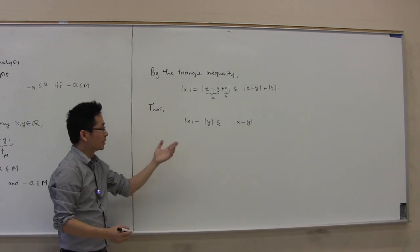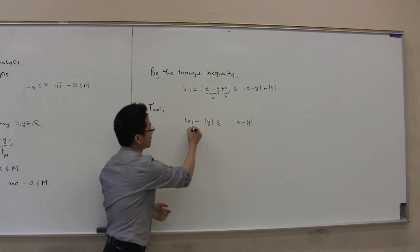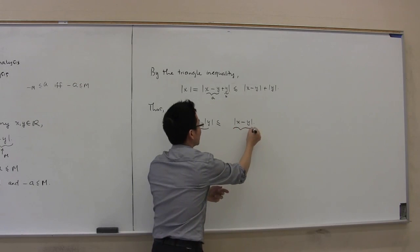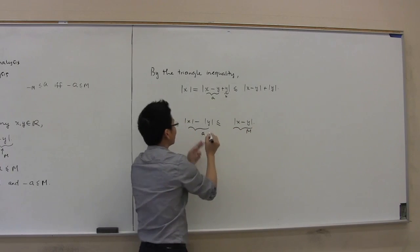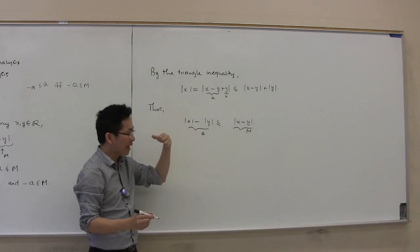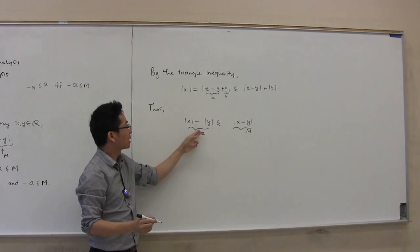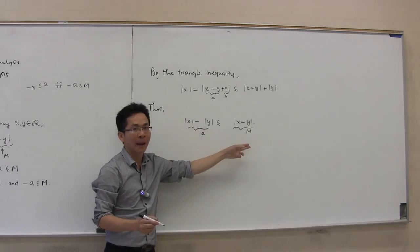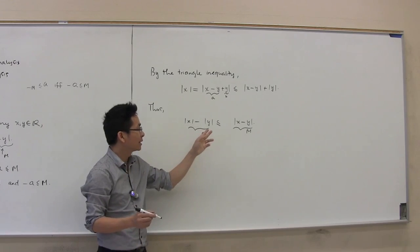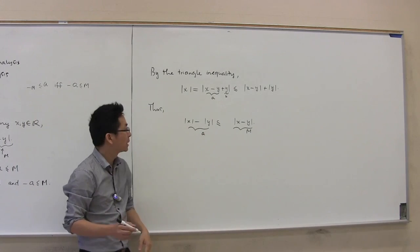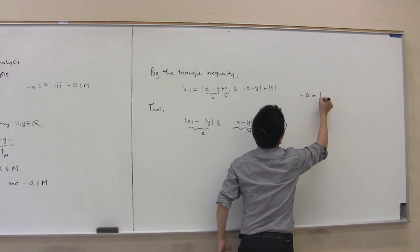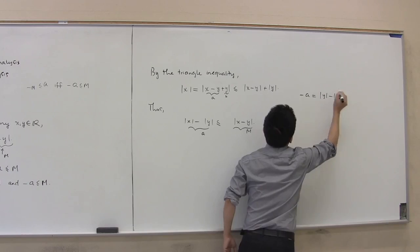Now let's continue by proving that -a is also less than or equal to m. Here, a is (|x| - |y|). We have shown that a ≤ m. In order to complete the proof, we also need to show that -a ≤ m, and note that -a = |y| - |x|.